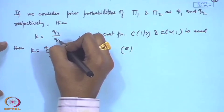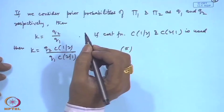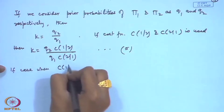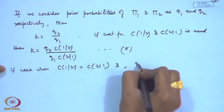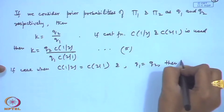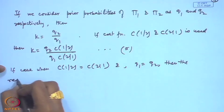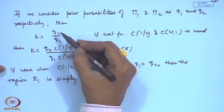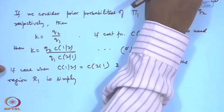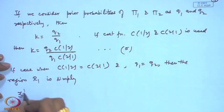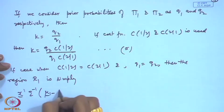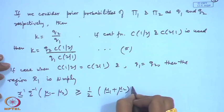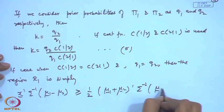In the special case when q1 = q2 and c12 = c21, k becomes 1 and log k = 0. The region R1 simplifies to: x' sigma^{-1} (mu1 - mu2) ≥ (1/2)(mu1 + mu2)' sigma^{-1} (mu1 - mu2).